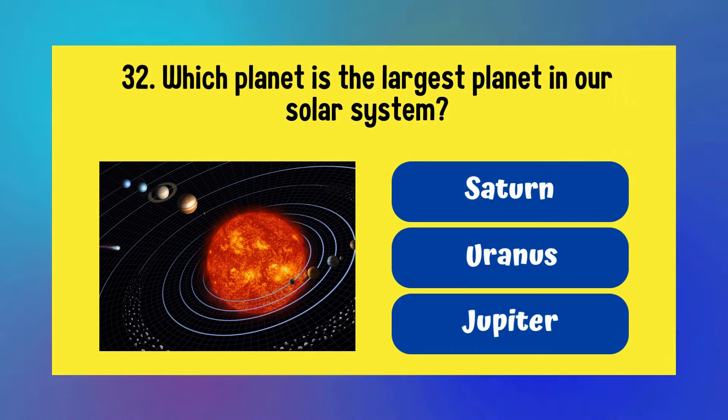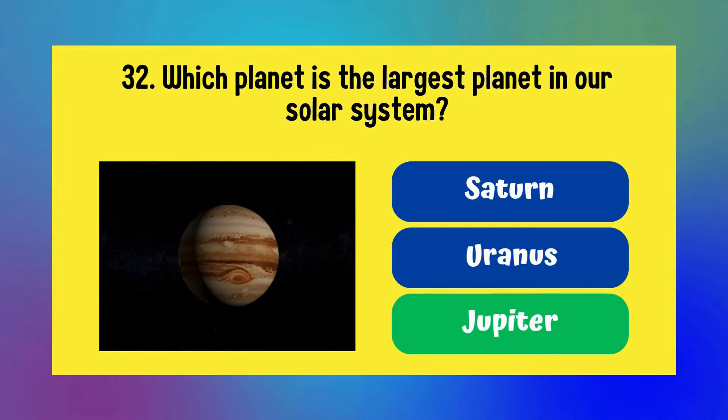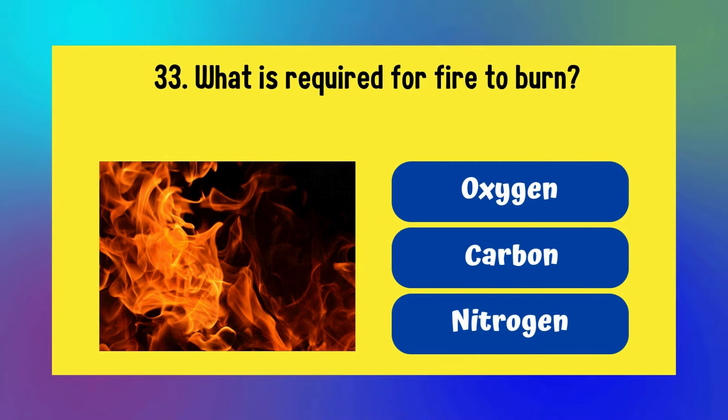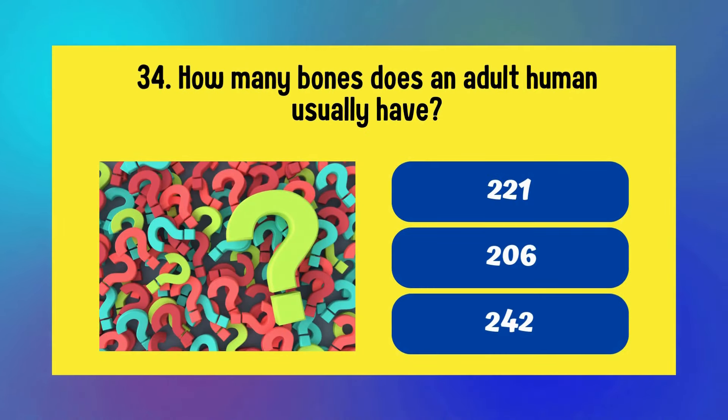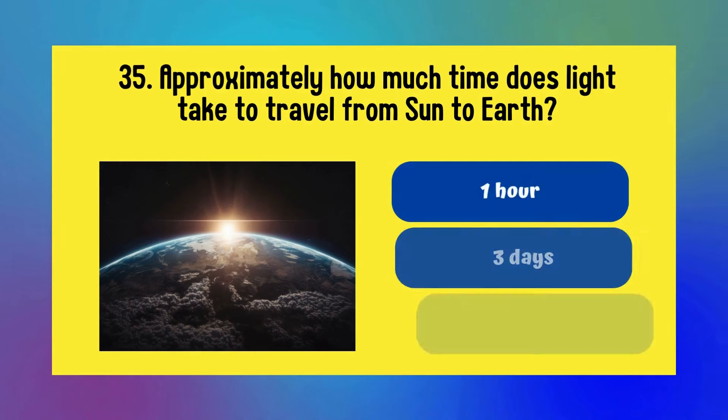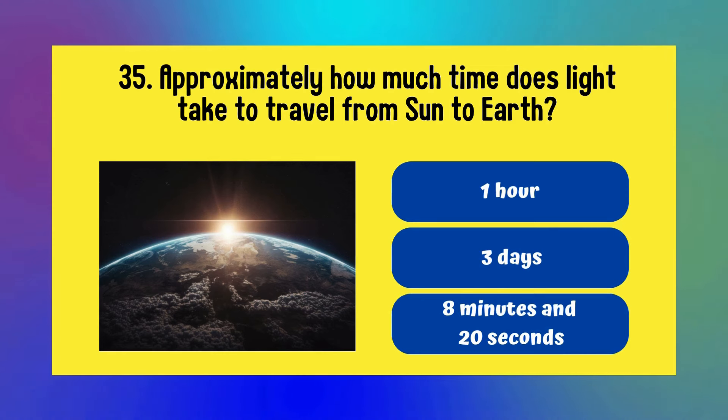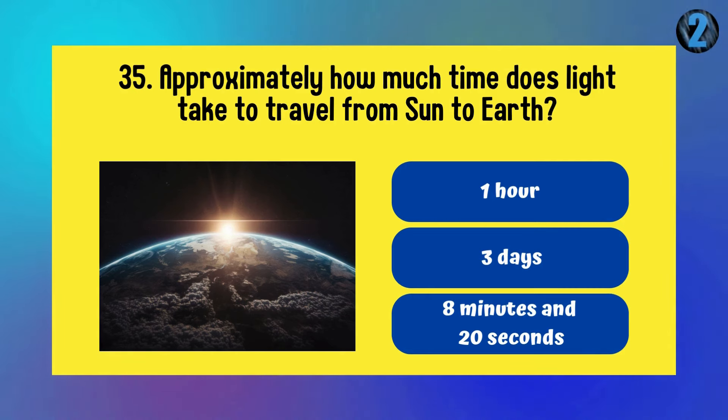Which planet is the largest planet in our solar system? Saturn, Uranus, or Jupiter? It is Jupiter. What is required for fire to burn? Oxygen, carbon, or nitrogen? It is oxygen. How many bones does an adult human usually have? 221, 206, or 242? It is 206. Approximately how much time does light take to travel from Sun to Earth? 1 hour, 3 days, or 8 minutes and 20 seconds? It is 8 minutes and 20 seconds.